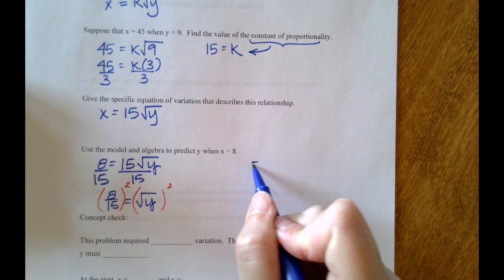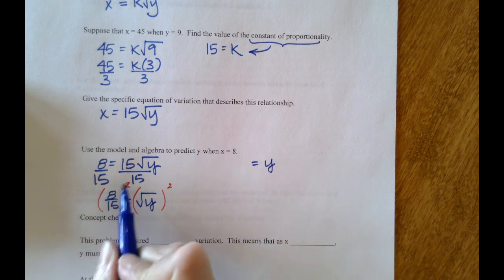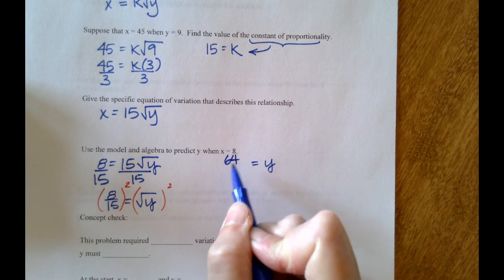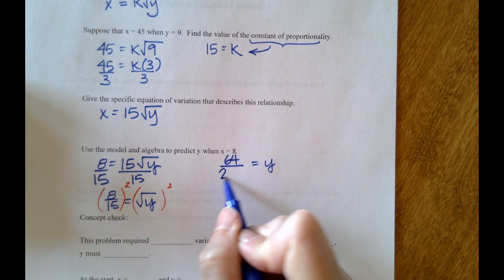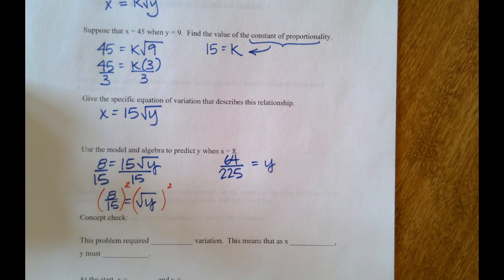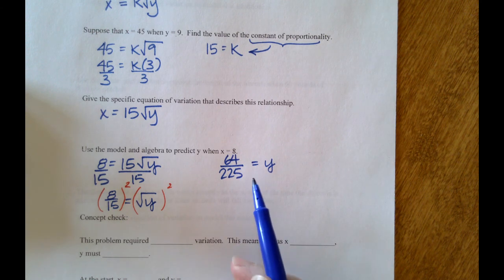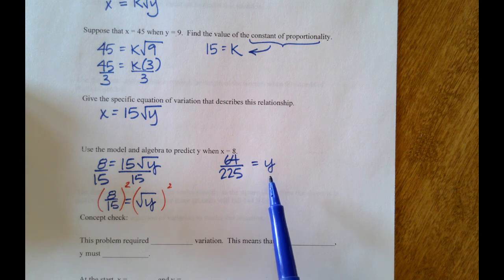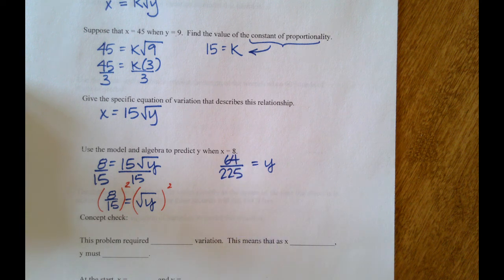And when we do that, let's see, 8 squared is 64, 15 squared is 225. So we have a projection that when x equals 8, y should be 64/225.